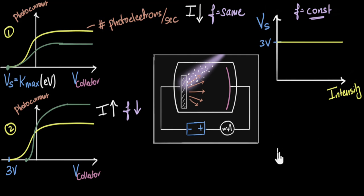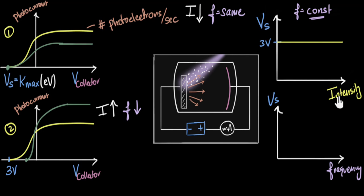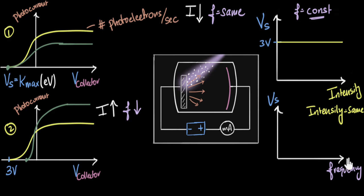One last graph: stopping voltage versus frequency, keeping intensity the same. If I increase the frequency of the light, that means I'm increasing the energy of the photon — Planck's equation, E equals HF. So if the energy of the photon is increasing, the kinetic energy of the electrons will also increase, the maximum kinetic energy will increase, and therefore the stopping voltage should also increase. As frequency increases, the stopping voltage increases — but is it a straight line? Does it start from zero? Is it a curve?